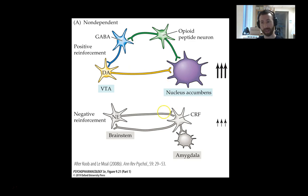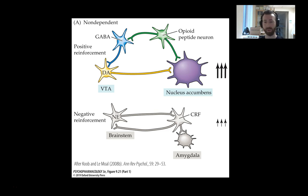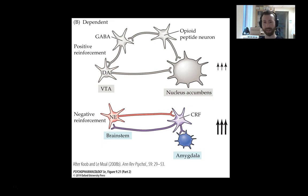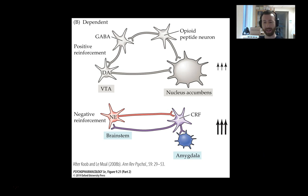Looking at this graphically: in a non-dependent state, we see normal high levels of activity in our reward pathway — an opioid peptide neuron communicating with a GABAergic interneuron, facilitating the release of dopamine to the nucleus accumbens — with normal high-level signaling for reward. However, with the negative reinforcement system coming online, a dependent individual shows decreased activity of this reward circuit and increased activity of the extended amygdala anti-reward system, where norepinephrine-releasing neurons are more active on CRF-producing neurons, facilitating the stress response. The extended amygdala anti-reward system activity is turned up and the reward pathway is turned down.